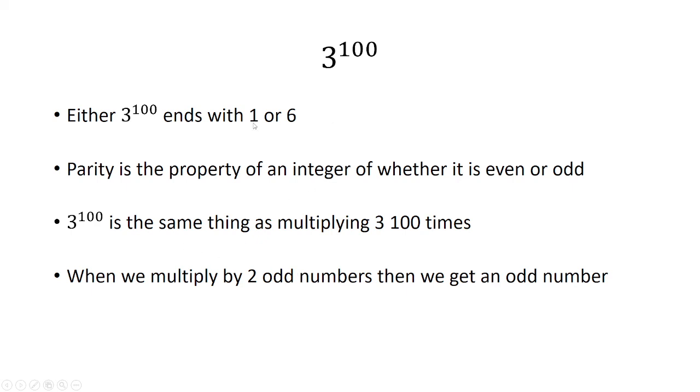So the question is, is a number that ends with 1 an odd number, or is a number that ends with a 6 an odd number? Clearly, a number that ends with 1 is an odd number. Therefore, 3 to the 100th has 1 as its unit digit.